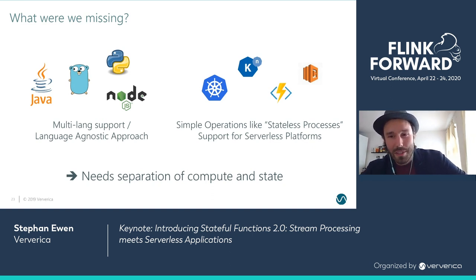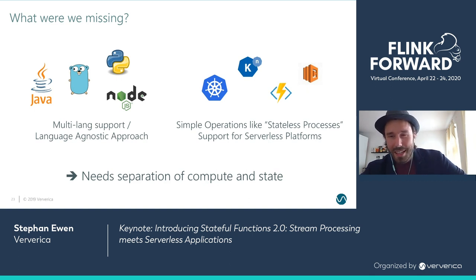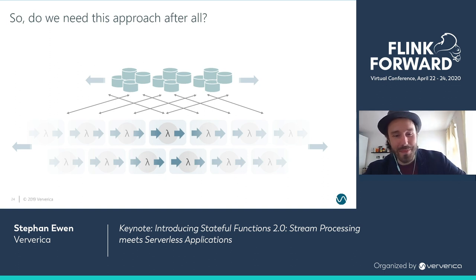While multi-language support has approaches — for example the way the Flink Python APIs do it, or the way Beam does its portability layer — especially the second point, trying to operate it like a stateless application, seems like something where without separating compute and state, it wouldn't really be possible. This stands in contrast to the whole premise of stream processing and stateful functions. It kind of sounded like: does it mean the whole thing is void, and we're basically going back to a separate architecture — a database in the background and then some computation in a stateless separate tier?